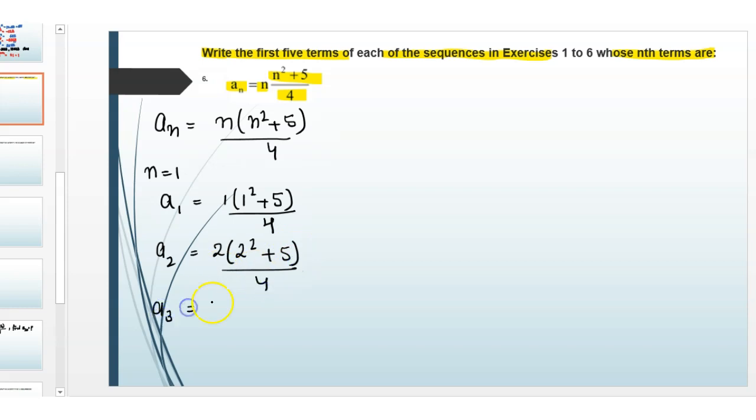Then a3 = 3(3² + 5)/4. Now a4 = 4(4² + 5)/4.